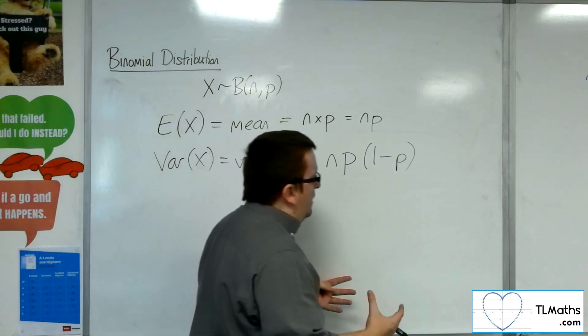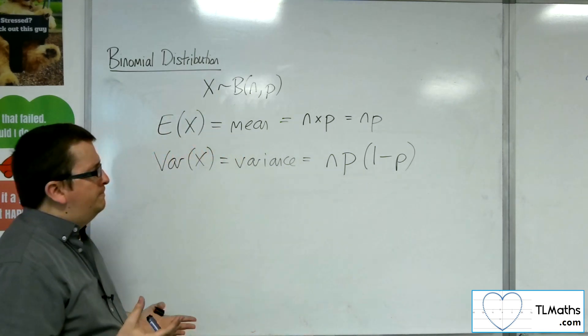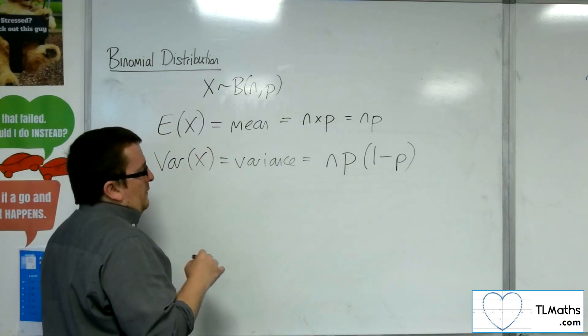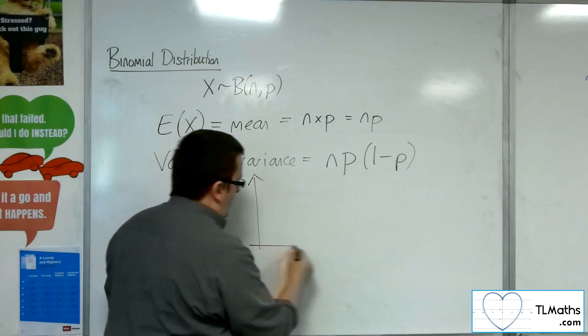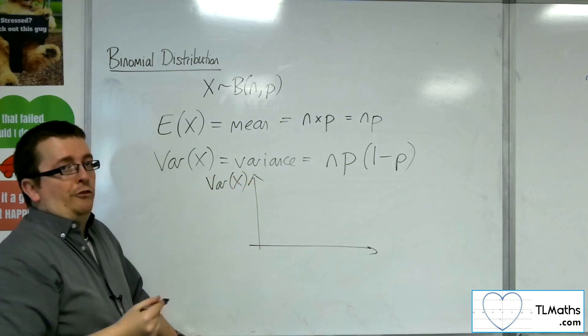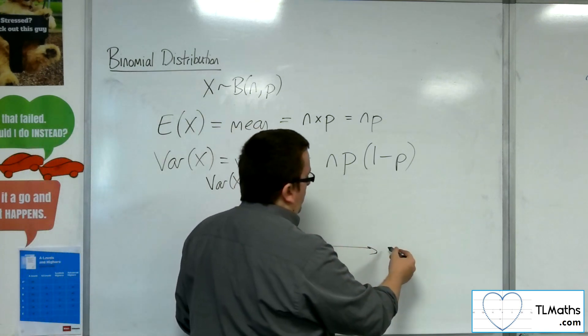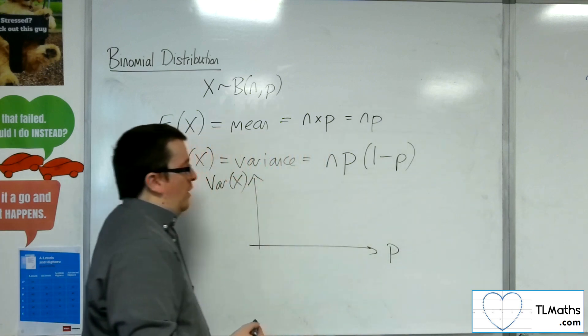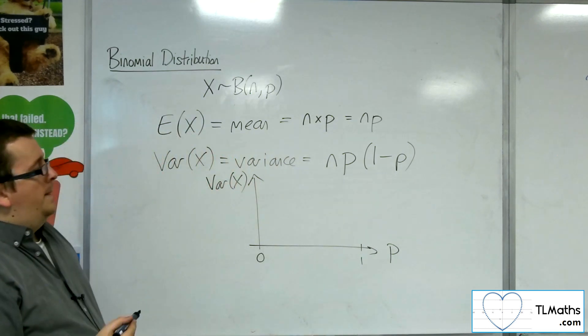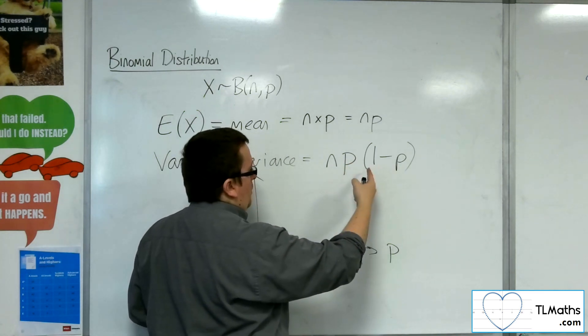You can think of that as a quadratic function, if you like. If you were going to graph this, the variance—and remember the variance tells you how spread out it is, so the larger the variance, the more spread out it is—then if you've got the probabilities along the bottom, going from 0 up to 1, then when the probability is 0, you get, well, 0. The variance is 0.